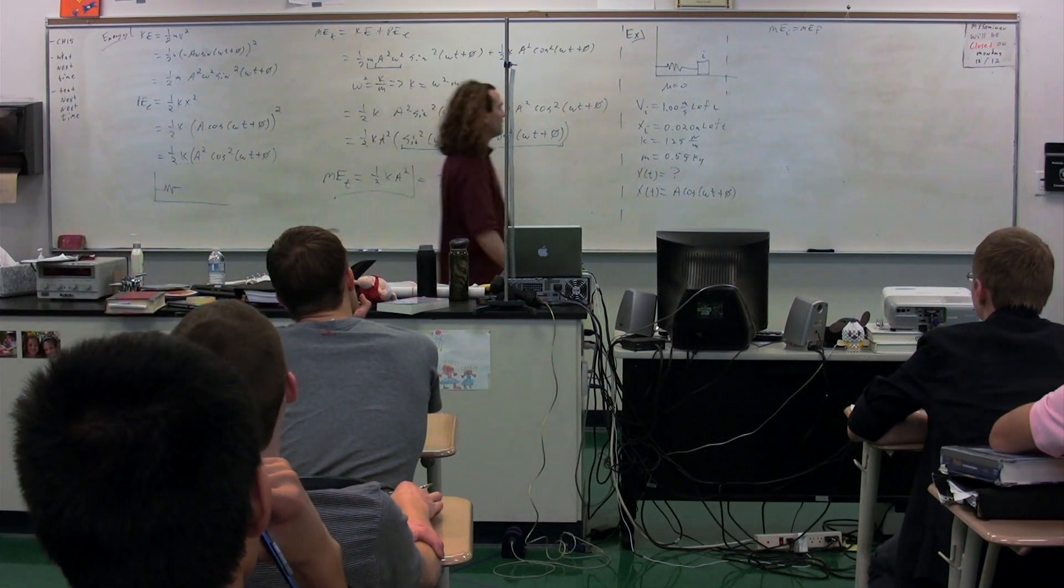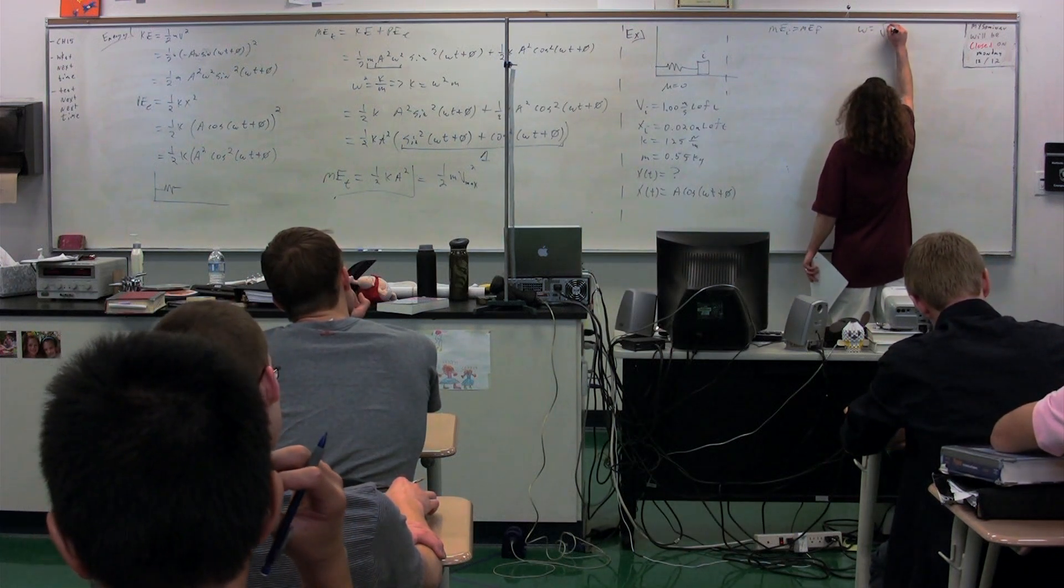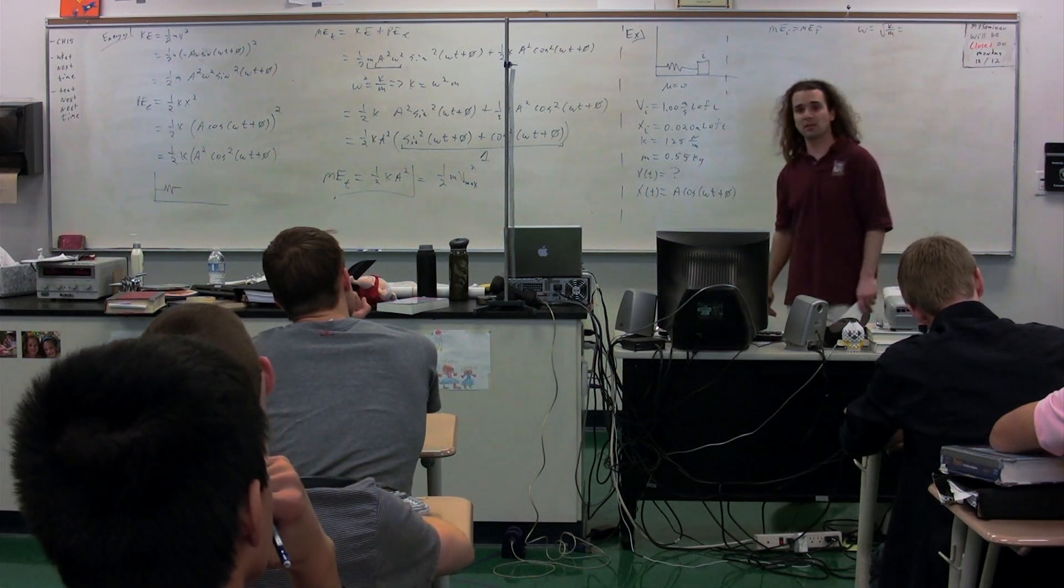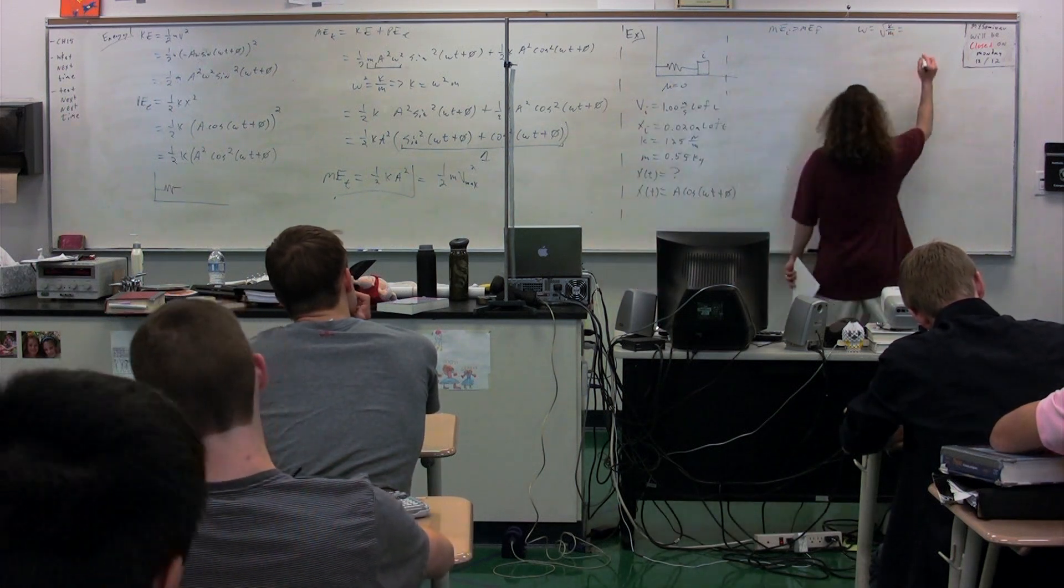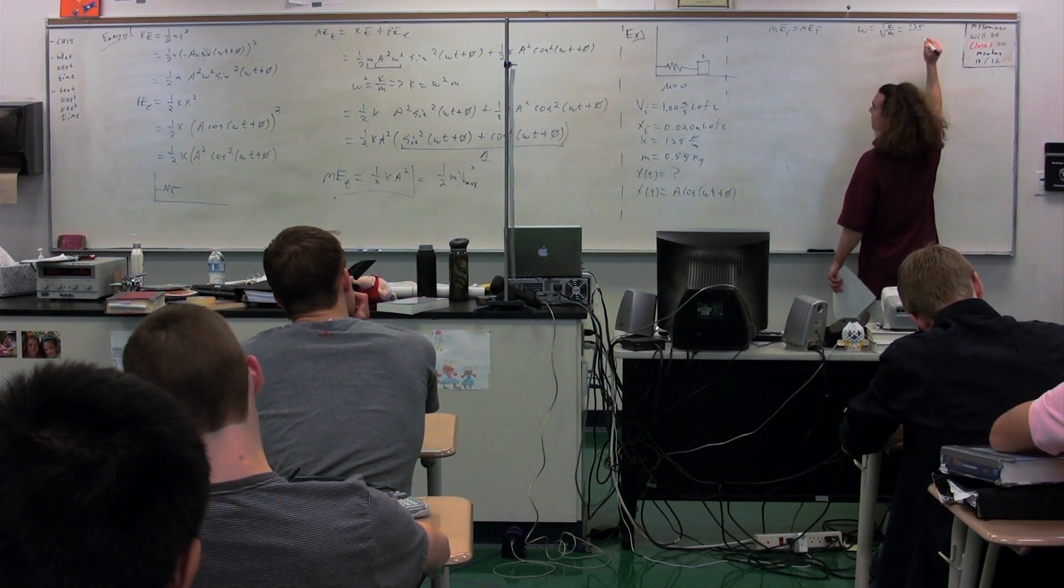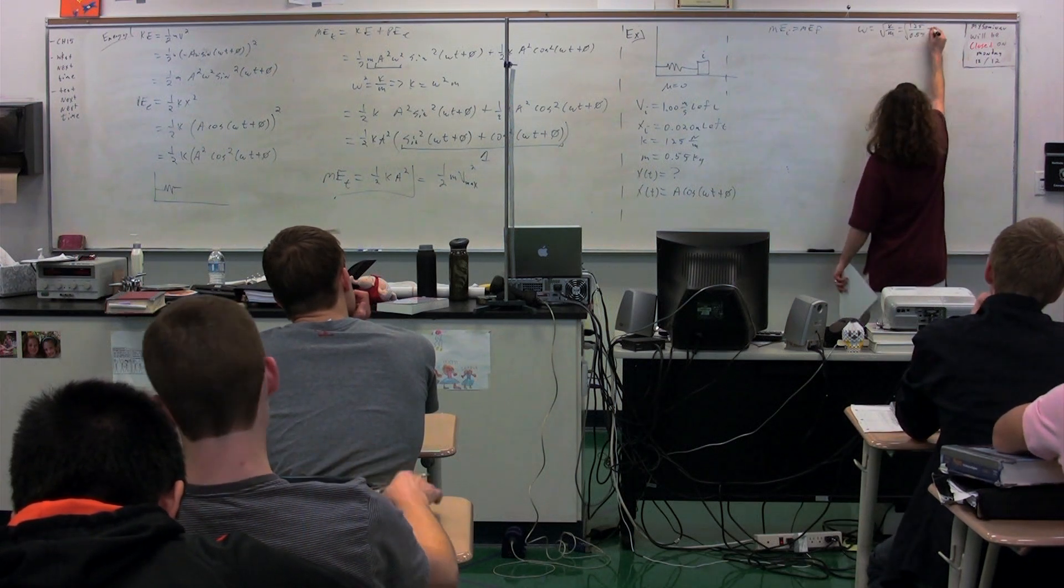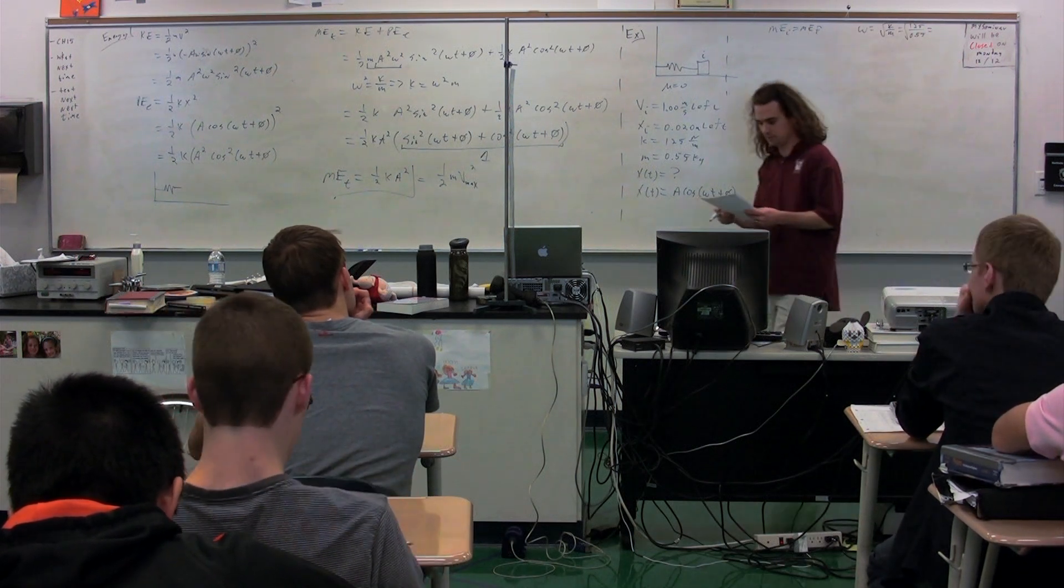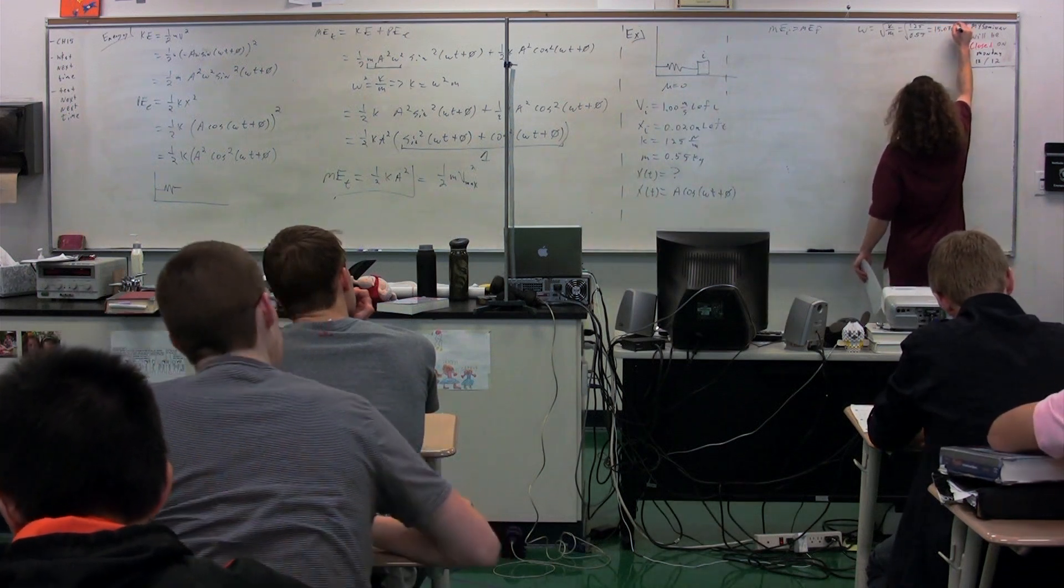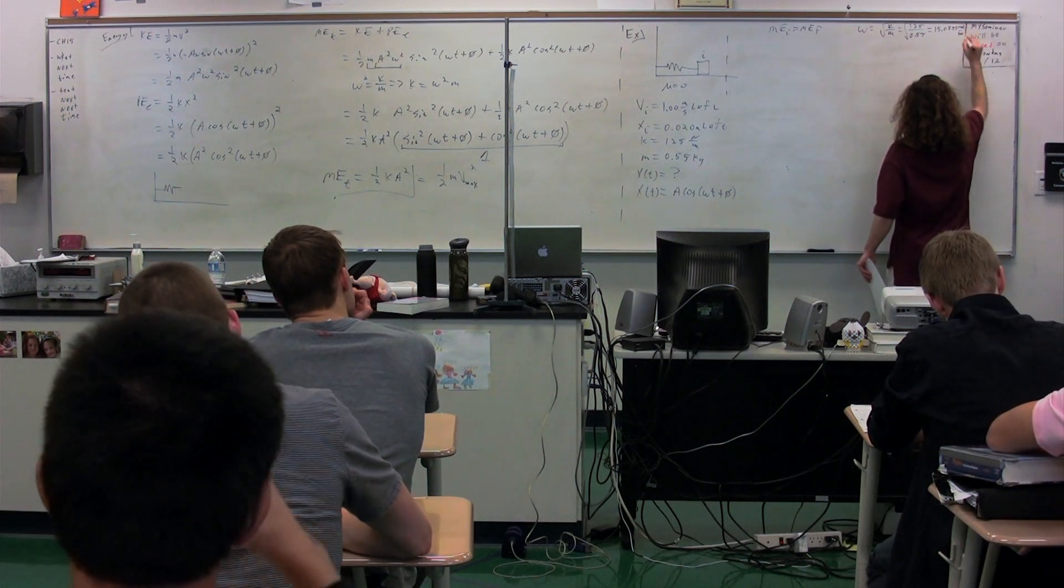We have K and M, so we can figure out the angular frequency. Okay. K is 125 divided by the mass, which was 0.55. Take the square root of that, and we have the angular frequency, which is 15.07. 15.055 radians per second. Okay.